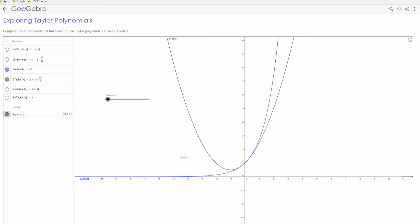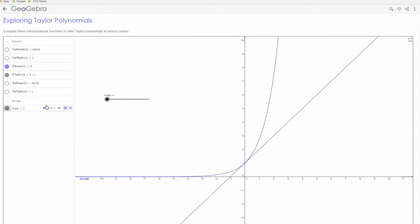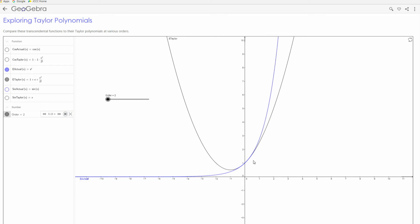So now I'm just going to let this run up through the orders here. Maybe slow that down a little bit so we can see it happen. So as we go up to higher and higher degree, we see those, especially on the right, those two curves are converging on one another.